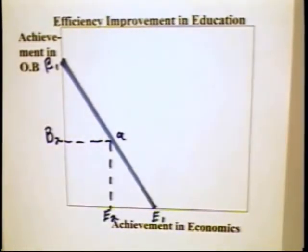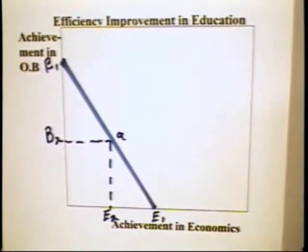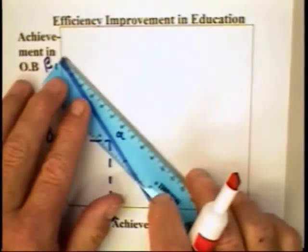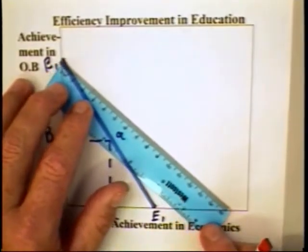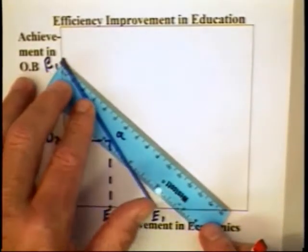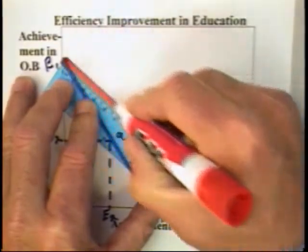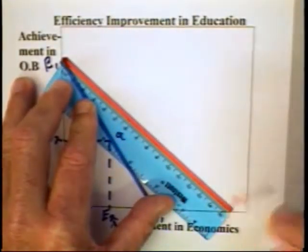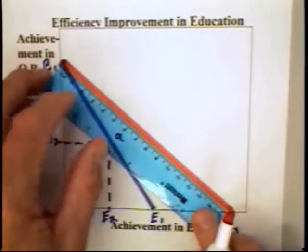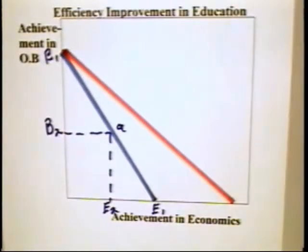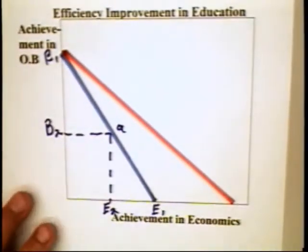Now suppose that the individual professor in economics decides to introduce some technological improvement. That is, by having this technology available to the students, the production possibility curve moves out as I have described it here.